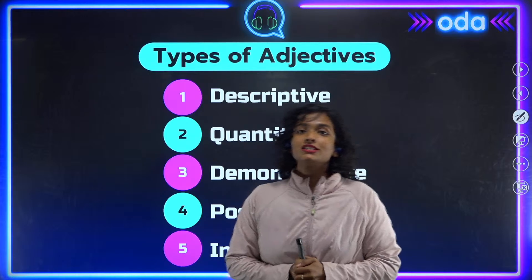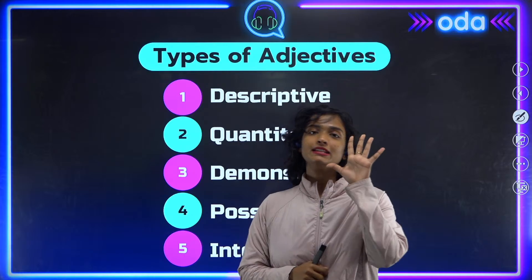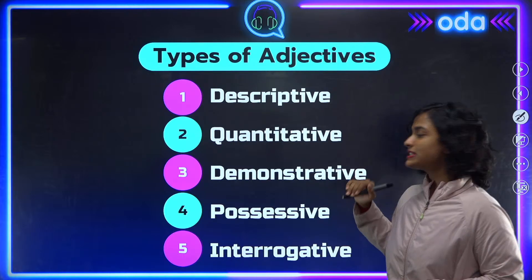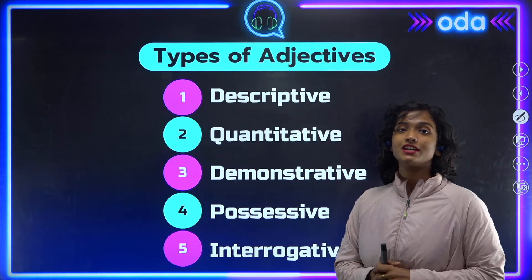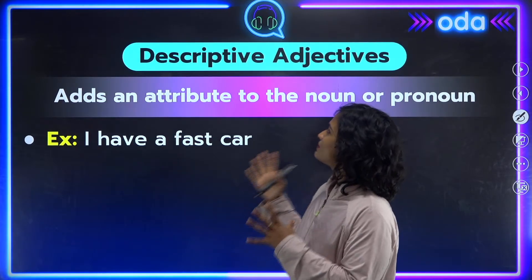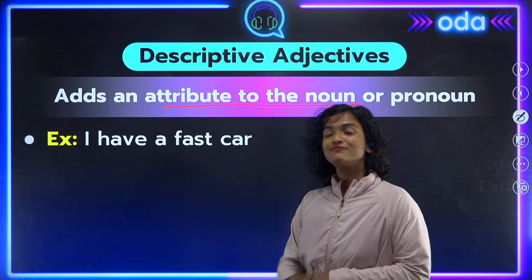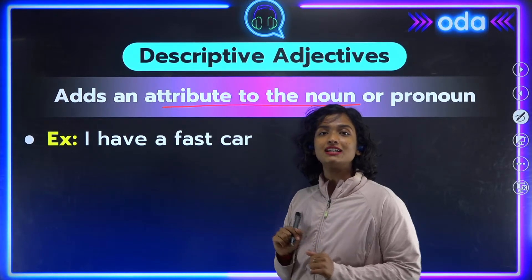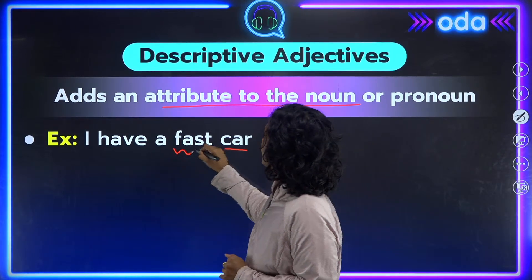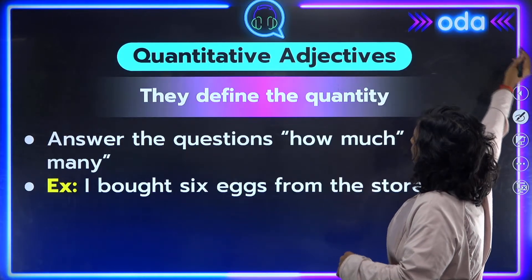Moving on to our third component: the types of adjectives. Today we will cover five main types — descriptive, quantitative, demonstrative, possessive, and interrogative. Firstly, descriptive adjectives simply add an attribute to the noun or pronoun. For example, 'I have a fast car' — 'car' is the noun and 'fast' just tells us what kind of car it is.